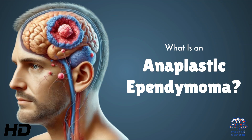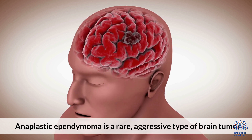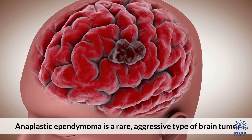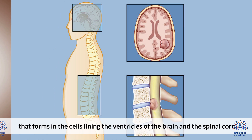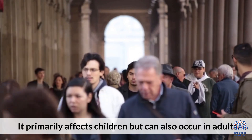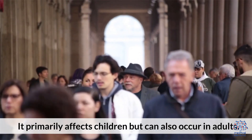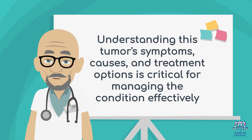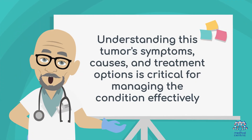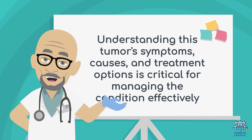Today's medical-centric topic is: what is anaplastic ependymoma? Anaplastic ependymoma is a rare, aggressive type of brain tumor that forms in the cells lining the ventricles of the brain and the spinal cord. It primarily affects children, but can also occur in adults. Understanding this tumor's symptoms, causes, and treatment options is critical for managing the condition effectively.